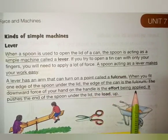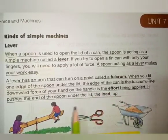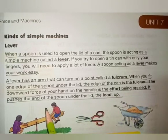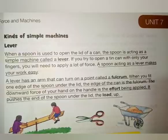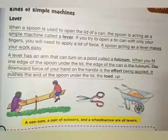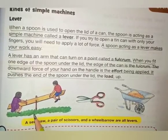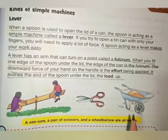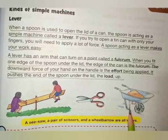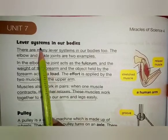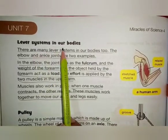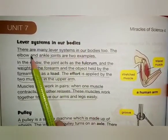The downward force of your hand on the handle is the effort being applied — it pushes the end of the spoon under the lid. The load is pushed up. Examples of levers are scissors, a pair of scissors, and a wheelbarrow.